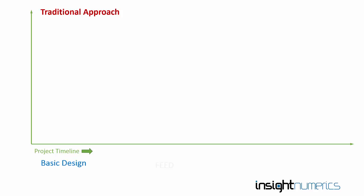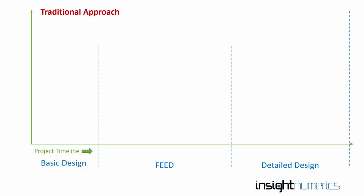I have a graph here with a schematic representation of a typical project timeline on the X axis, through the main project phases of Basic Design, Feed, and Detail Design. On the Y axis I have Detector Count, and I'm going to look at why and when the Detector Count typically changes.